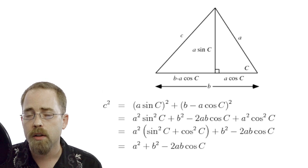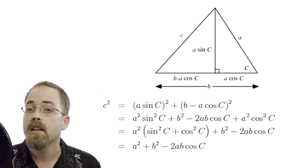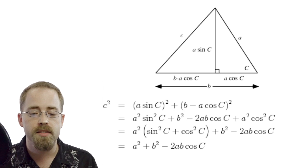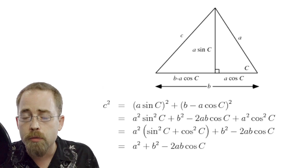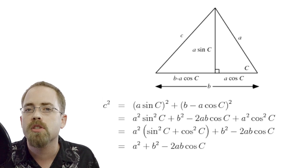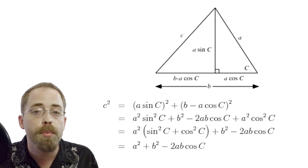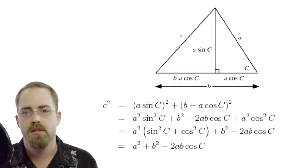This minus 2ab cos C lets you handle any other angle there at angle C. It doesn't have to be 90. What happens if it is 90? Well, what is cosine of 90? Zero. Cosine of 90 is zero. So that minus 2ab cos C, that term goes away. It's zero. So then you really do get Pythagoras. This is just Pythagoras expanded and made more useful and applying to more triangles. I think that's pretty cool.